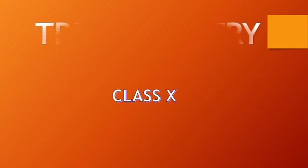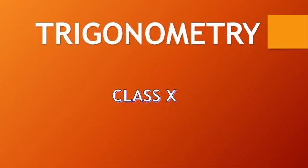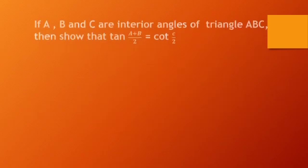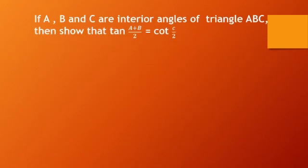Dear children, today we will solve this problem in trigonometry. Question: if a, b, and c are interior angles of triangle ABC, then show that tan((a + b) / 2) is equal to cot(c / 2).